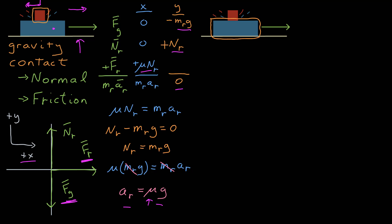If I identify blue as my object, what are the forces on it? There's still gravity. There's a contact force between the ground and blue — the ground crosses the line that surrounds blue.